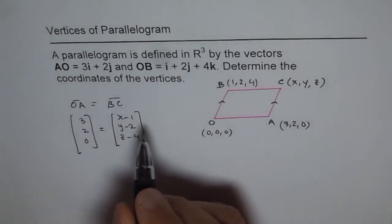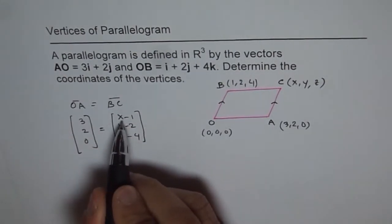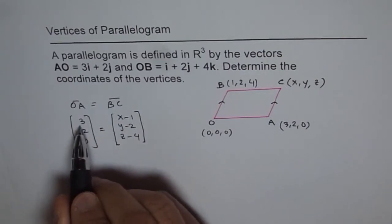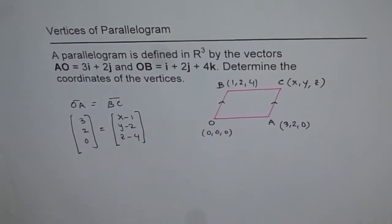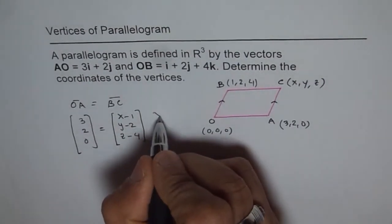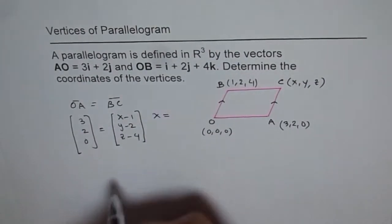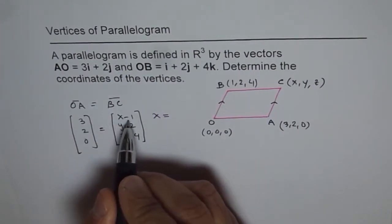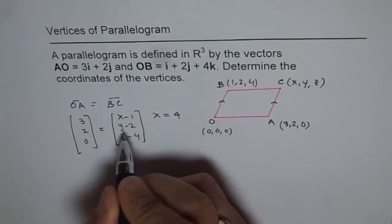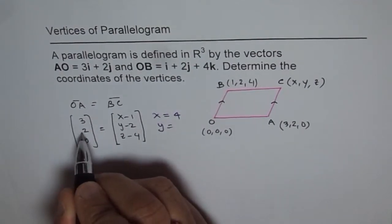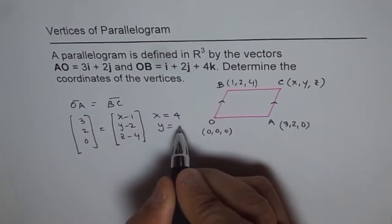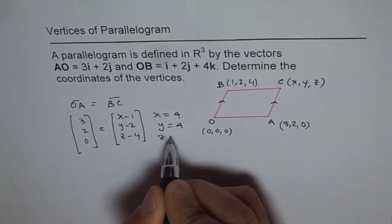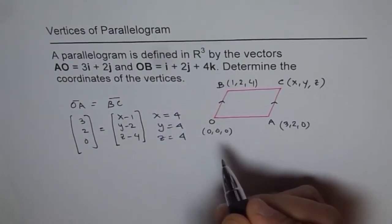From here we get X - 1 = 3, so X = 4. Y - 2 will go on that side, so it will become 4. And Z - 4 will go that side, so Z = 4.